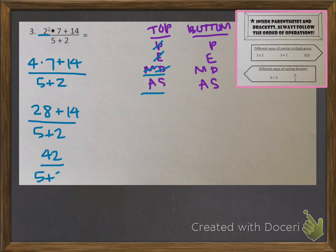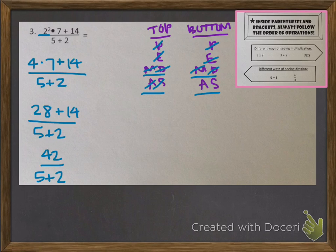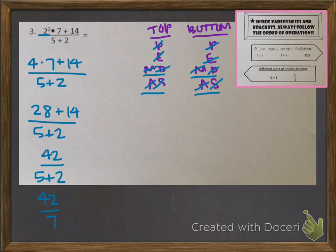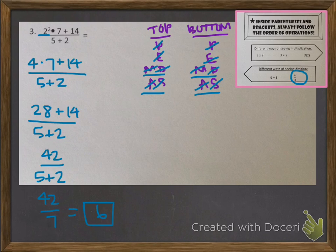So we have 42 over 5 plus 2, and the top is done. Now looking at the bottom: no parentheses, no exponents, no multiplication or division, but we do have addition: 5 plus 2 is 7. Now we have 42 over 7, which needs to be simplified. If you look in the corner, fractions can also mean division. So this means 42 divided by 7. How many times does 7 go into 42? That's 6. So our answer is 6.